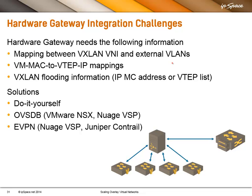The solutions range from do-it-yourself to more or less full-blown integration. There are two solutions for more or less full-blown integration. One is OVSDB, which came from the NICERAS product — now VMware NSX — and is also used by others including Nuage VSP. Or you can use EVPN or Layer 3 VPN, depending on whether you do Layer 2 or Layer 3 connectivity, which is supported by Nuage VSP and Juniper Contrail.